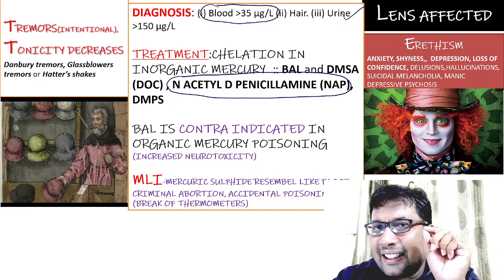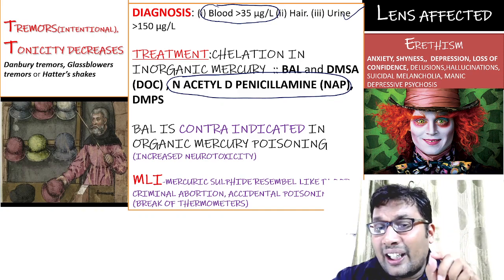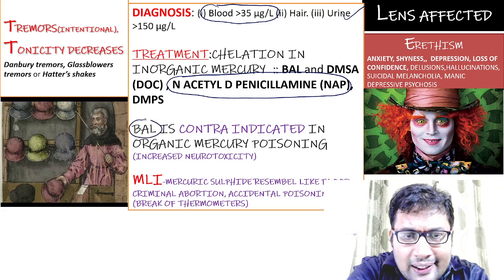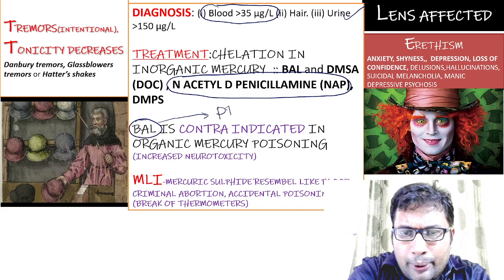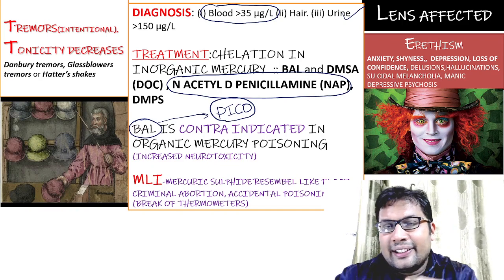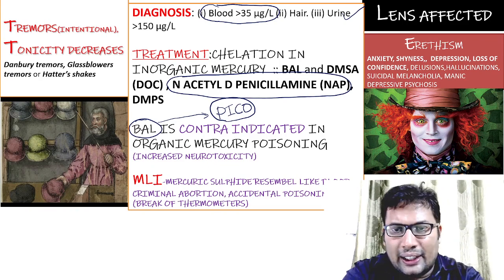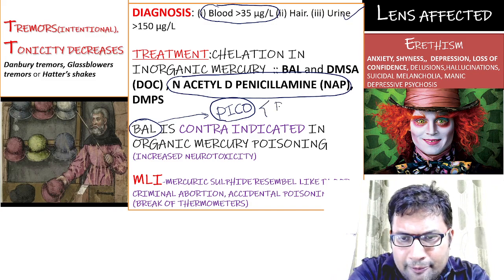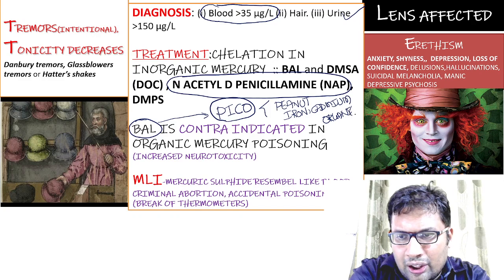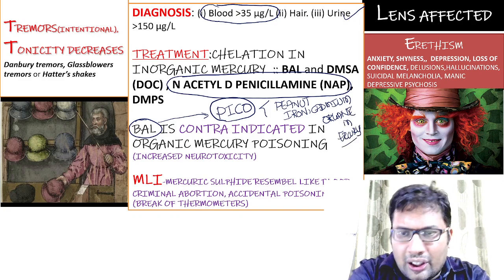One important exam point: BAL is contraindicated in organic mercury poisoning. The mnemonic for BAL contraindications is PICO — P for peanut allergy, I for iron poisoning, C for cadmium poisoning, O for organic mercury poisoning. In all these conditions BAL is contraindicated.